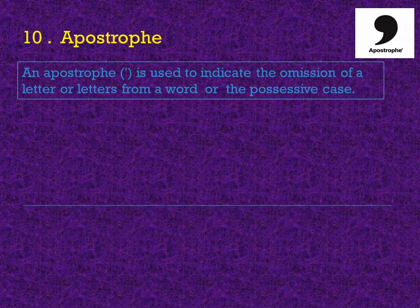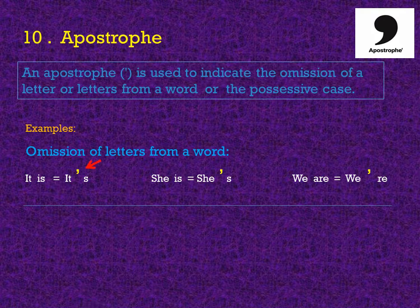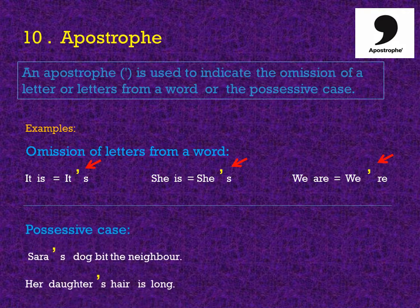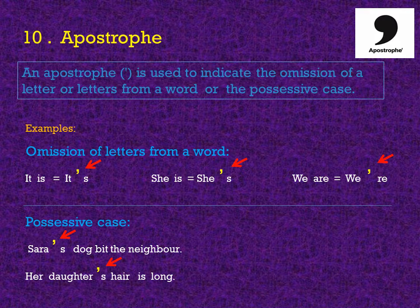Apostrophe. An apostrophe is used to indicate the omission of a letter or letters from a word, or the possessive case. For omission of letters: It is — we remove the letter I and change it to an apostrophe, giving us it's. She is — remove I, giving us she's. We are — became we're. For possessive case: Sarah's dog beat the neighbor. Whose dog? Sarah's. Her daughter's hair is long. Whose? Hers.